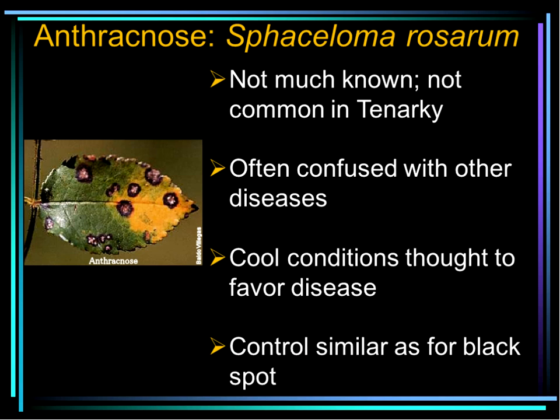In cooler areas like around Boone, there may be infracnose. It's not common in the Tanarkey district — that's Tennessee, Arkansas, and Kentucky — but Virginia and West Virginia have problems with it, and it's possible in mountain areas of North Carolina. It can be confused with black spot, but the lesions have a definite border, a tan center, and little black specks which are the fruiting bodies. It's also a cool weather disease, so most won't see it — but if you do, controls are similar to black spot.